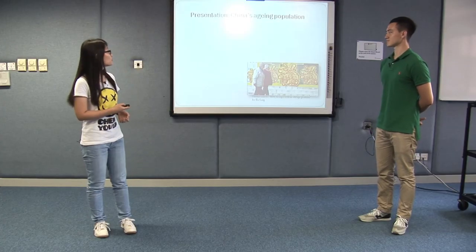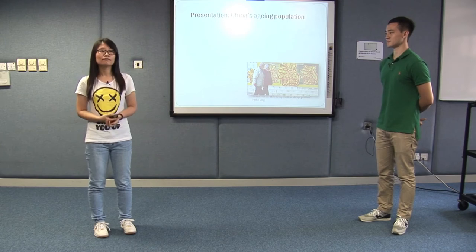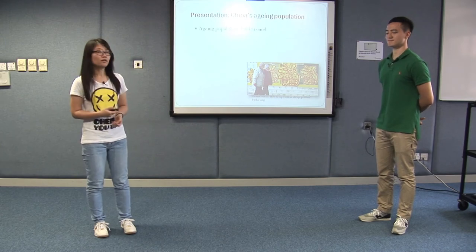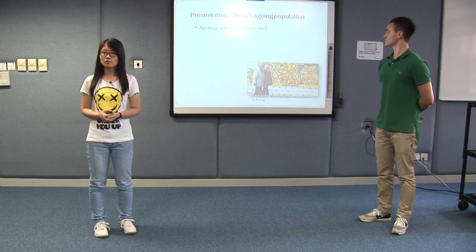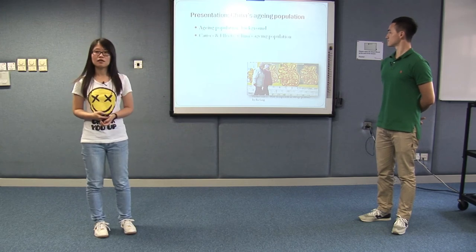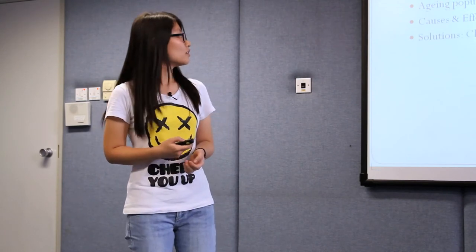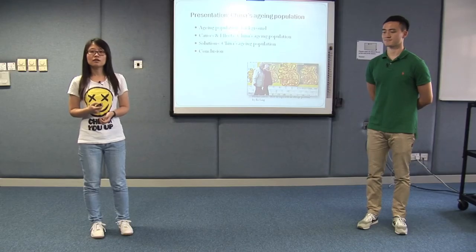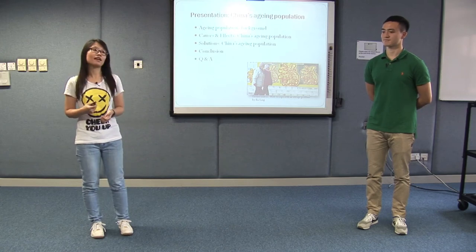We have divided our presentation into four parts. First, I will talk about the background of China's aging population, and second, its causes. Then Thomas will briefly present the events before looking at some solutions for the aging population. He will also give a brief conclusion. We will be talking for around 10 minutes and we welcome any questions at the end.